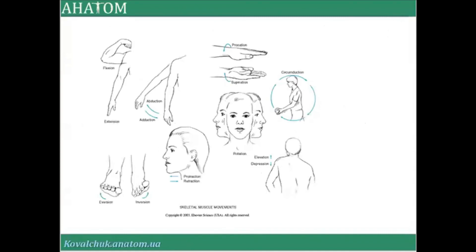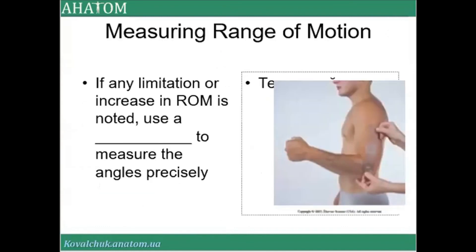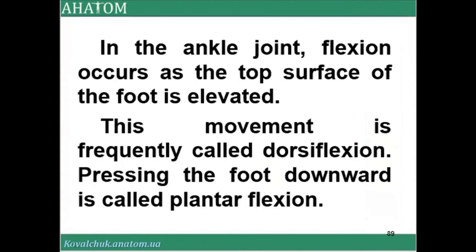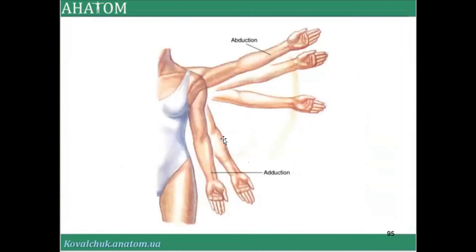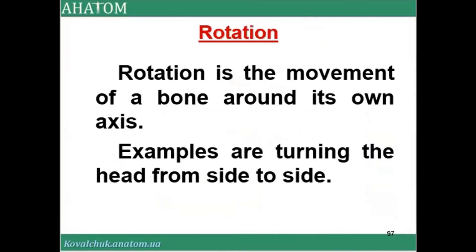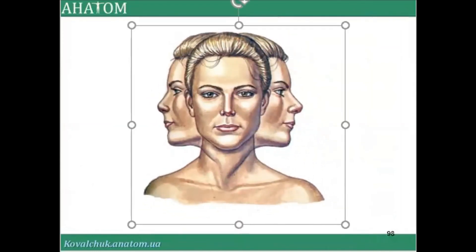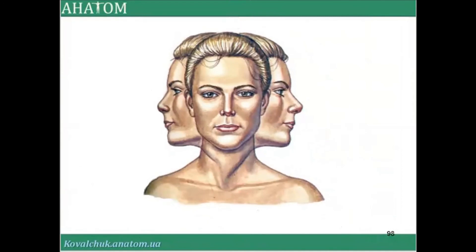Different types of movement include flexion and extension. Abduction is movement to the side, and adduction is movement toward the midline. Rotation is the movement of a bone around its own axis — for example, turning the head from side to side. Circumduction is a circular movement of a body part in which a cone-shaped airspace is traced.